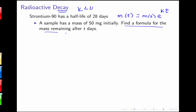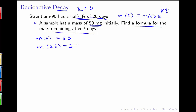Our first job is to find a formula for the mass remaining of strontium-90 after t days, when it started with 50 milligrams. So we know m of 0 is 50. We're also told this element has a half-life of 28 days, meaning after 28 days it decays to half the original amount. So if we start with 50 milligrams, after 28 days we'll have 25 milligrams.